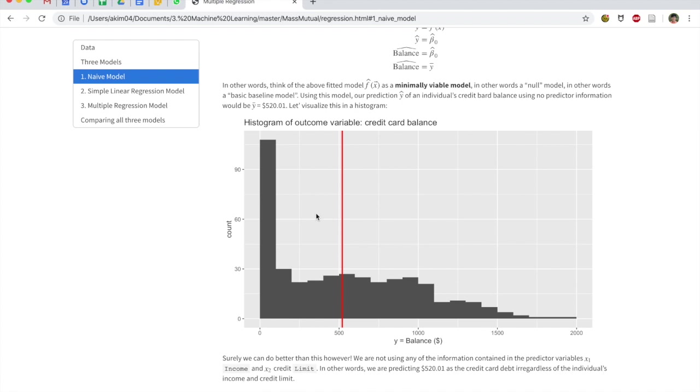So we can mark this value of Y-bar, which we're going to use as our naive model, with a red line in the histogram of the values. So this red line is $520, and it is the average of this sort of right-skewed set of credit card debt, credit card balance, which is basically debt. So that's our naive model.